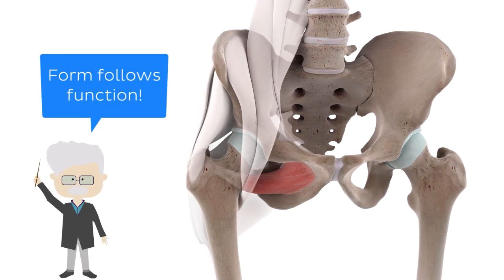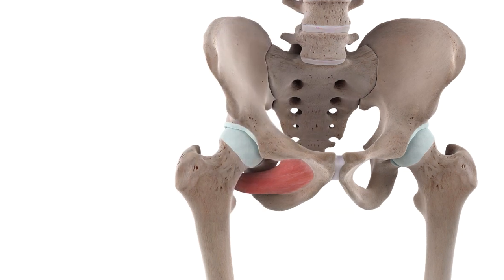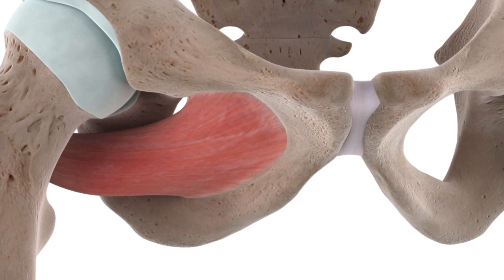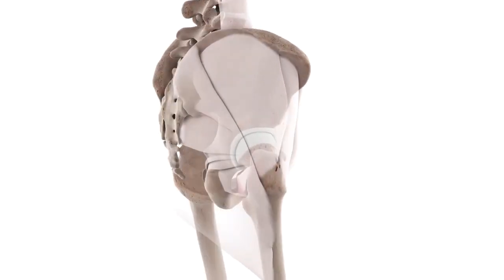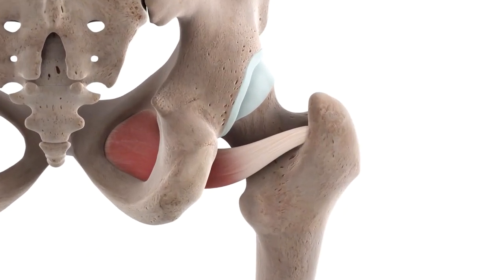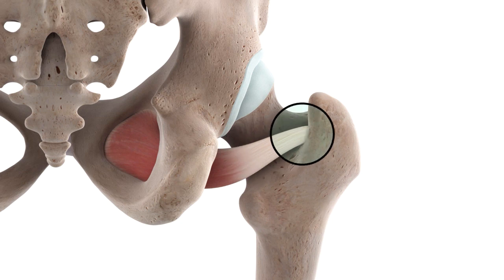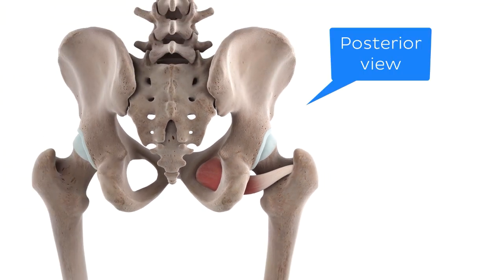In order to understand the functions of the obturator externus, we need to first learn about the bones it attaches to and the joints that it crosses. Taking a closer look at our 3D model, we can see that the obturator externus muscle originates from the anterior surface of the obturator membrane and the bony boundaries of the obturator foramen. Its muscle fibres converge posterolaterally to form a tendon, which passes posterior to the neck of the femur, to insert at the trochanteric fossa of the femur — the depression visible when we view our model from a posterior perspective.